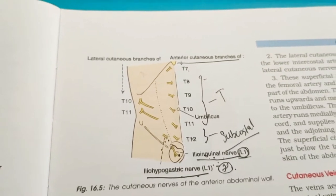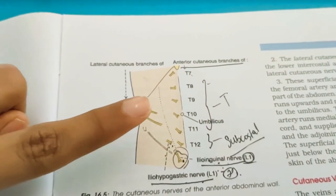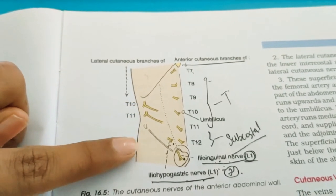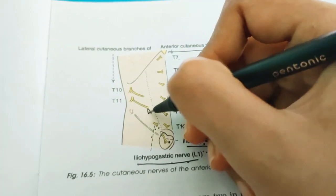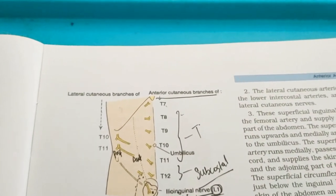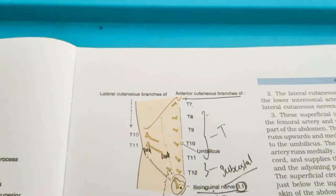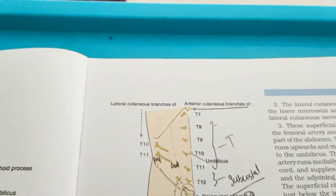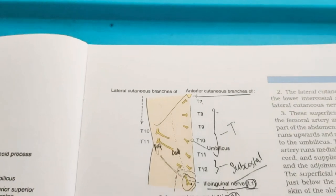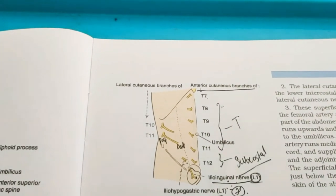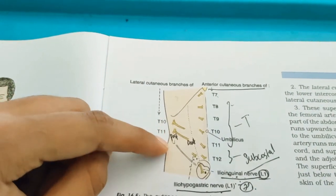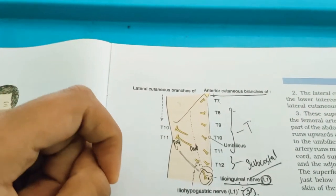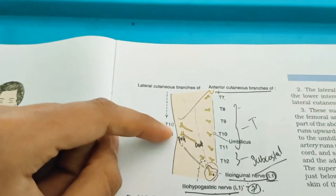Each lateral cutaneous nerve pierces the external intercostal muscle and divides into a large anterior branch and a small posterior branch. Both emerge between the lower digitations of the external oblique muscle and supply the skin of the side of the abdomen. The larger anterior branch also supplies the external oblique muscle.